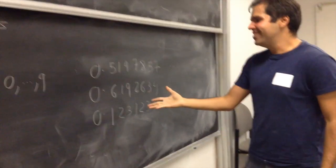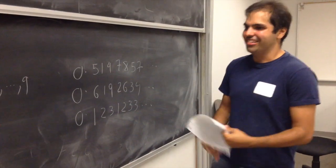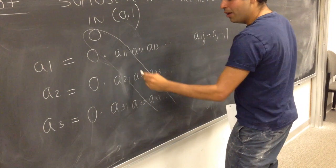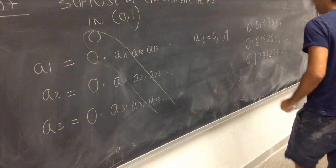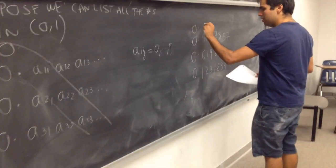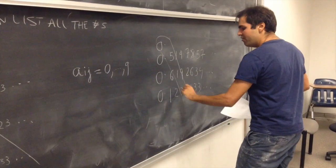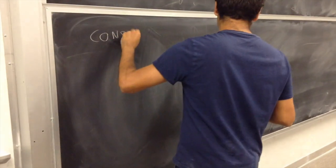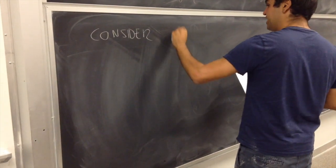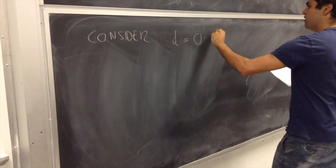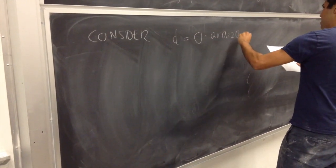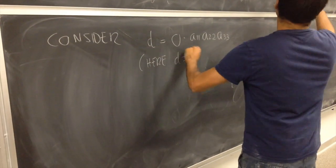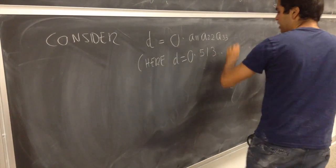Okay, now, as I said, it's called a diagonal argument, so maybe we should consider a diagonal number. Consider the fine number 0.A11, A22, A33. Or, for example, in this case, it would be, 0.513, et cetera. So, you just literally going down the diagonal, consider D, which is the diagonal number, is just 0.A11, A22, A33. So, here, as I said, for example, D would be 0.513, et cetera.